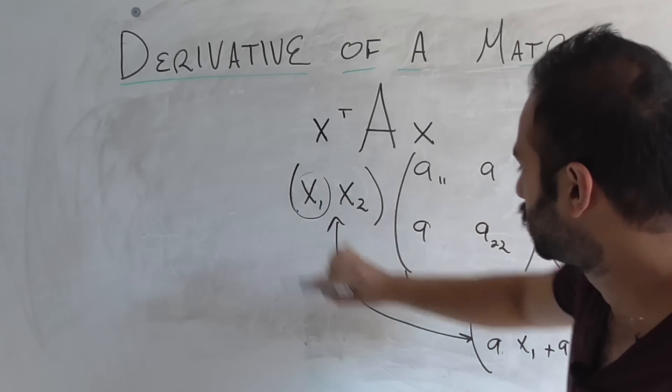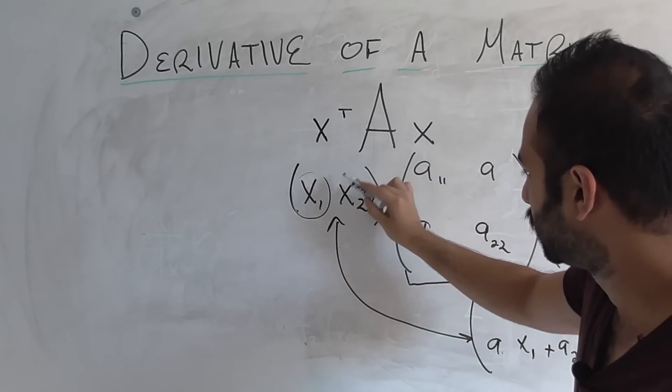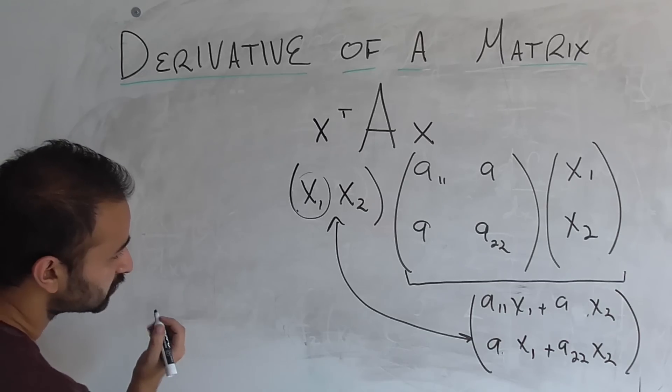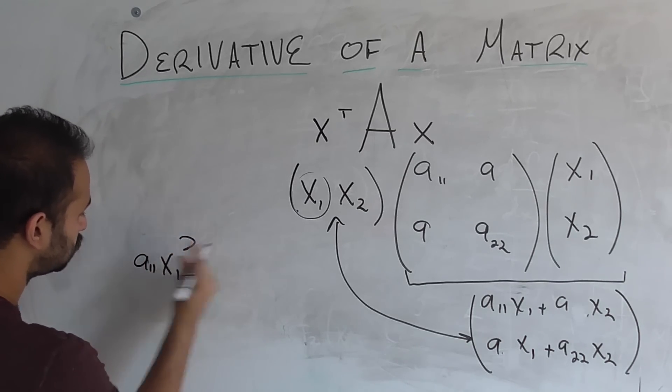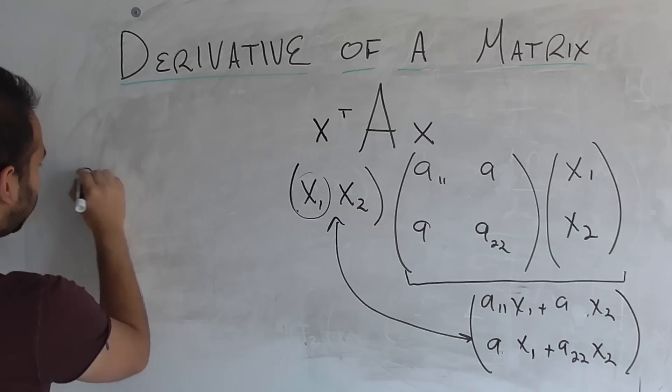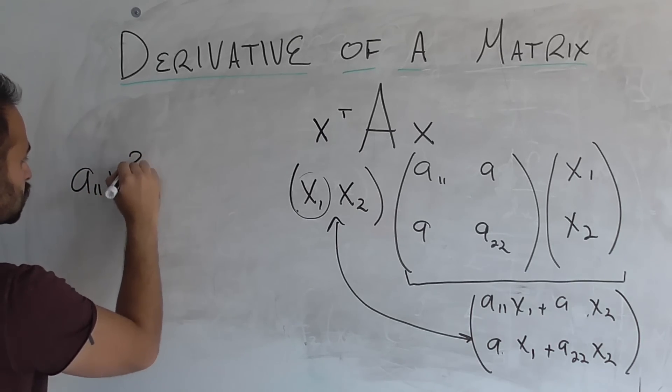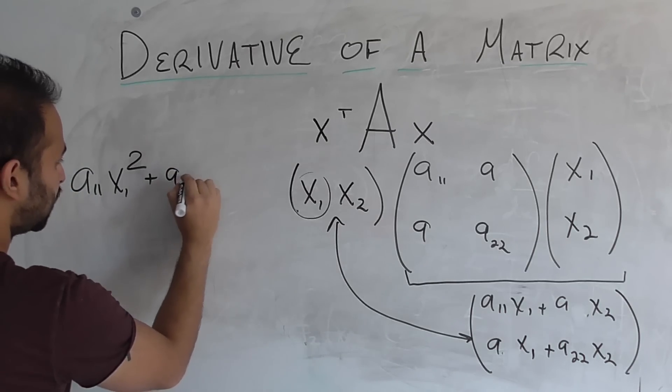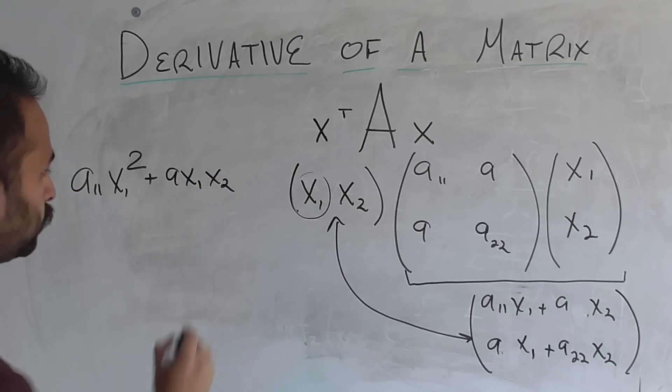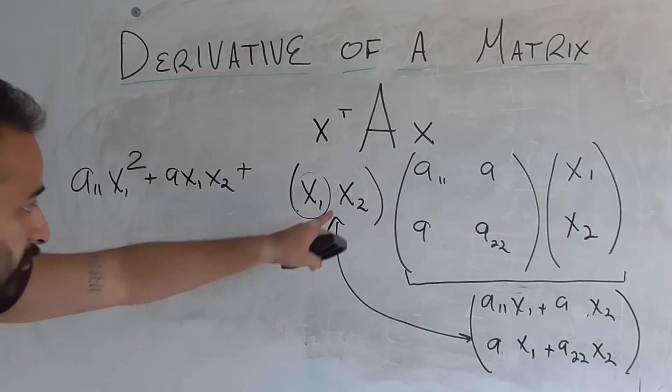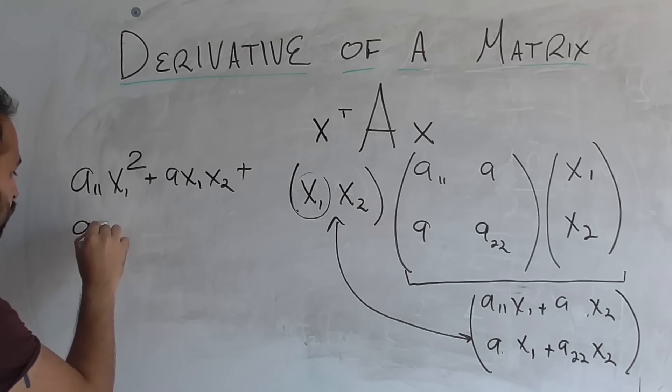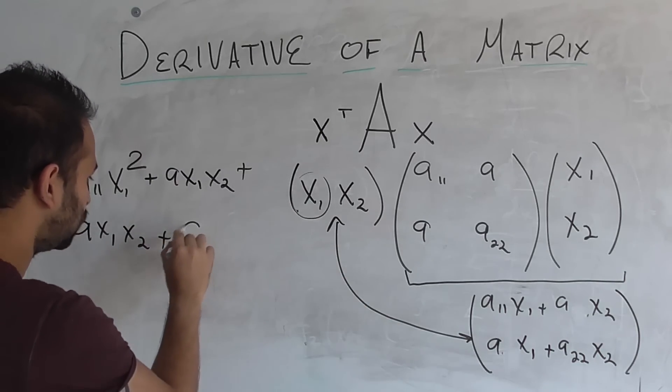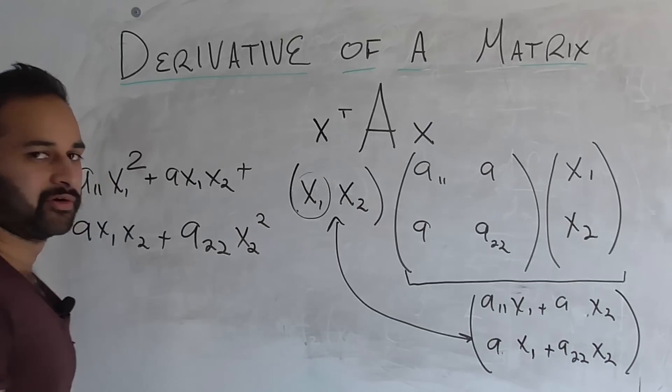Okay, so now we just have to apply this to that, which is simple as multiplying x1 by the top and then adding x2 times the bottom. So let's go ahead and do that here. That's going to look like a11x1 squared. Then we're going to get a plus ax1x2, right? Yeah. Then we're going to get the bottom times x2. So we're going to get ax1x2. And then we're going to get x2 times that, so a22x2 squared.